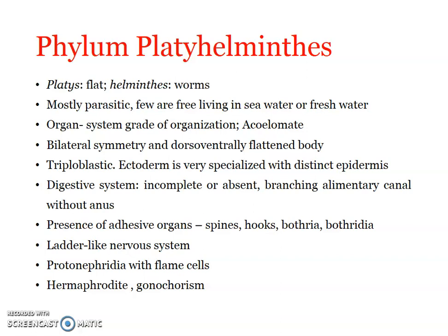As already mentioned, they are dorso-ventrally flattened, and that is how they got the name Platyhelminthes. They usually have a well-defined ventral surface bearing the mouth and gonopores. They have an organ system grade of organization — a higher level tissue-organ grade — where body cells aggregate into definite tissues, and tissues make up organs, forming different organ systems.